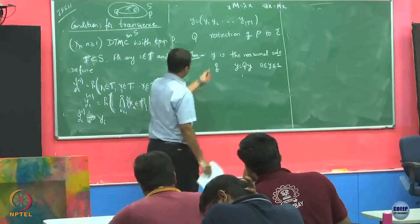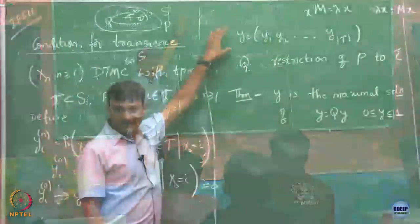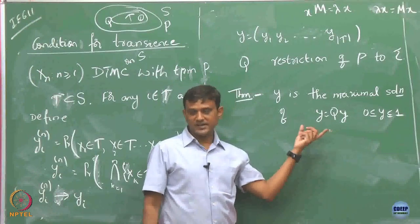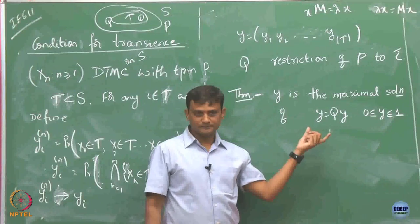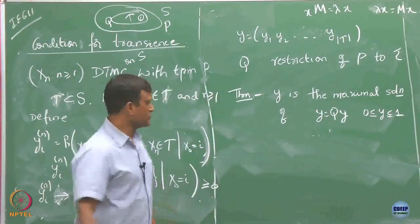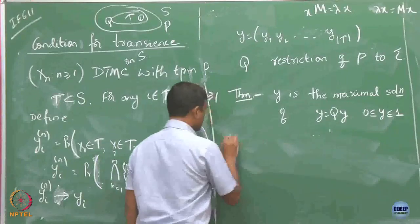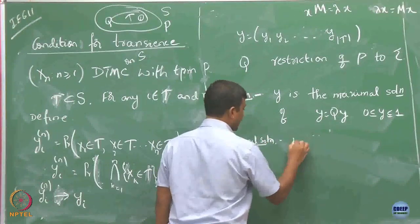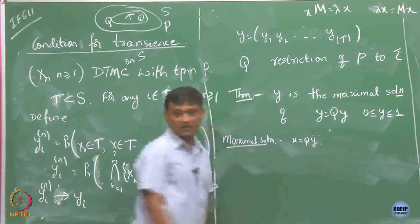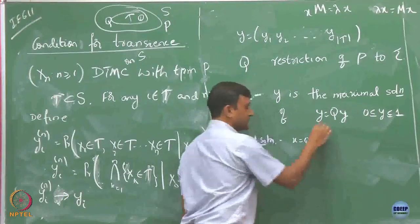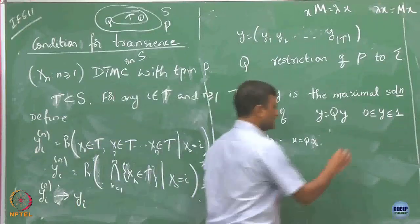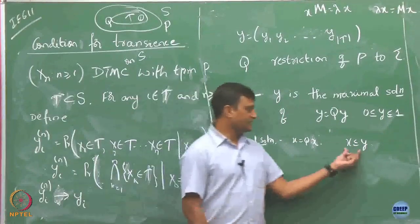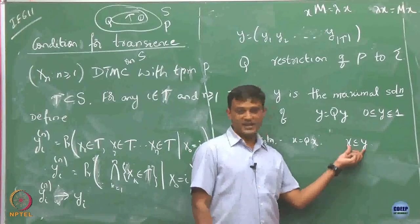Now we are going to say that this Y, which is defined as the probability of remaining in the class, is the maximal solution of Y equals QY. What is a maximal solution? It says that if x is another solution of this relation — another vector which satisfies this — then it must be the case that x is less than or equal to Y componentwise.